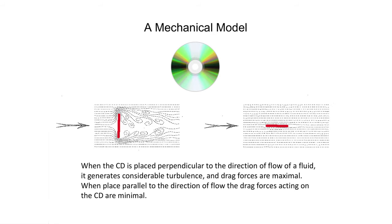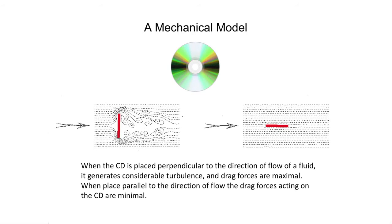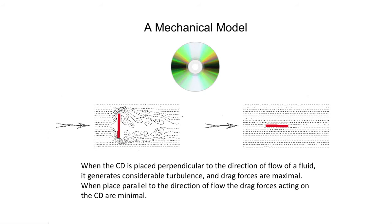We could construct a mechanical model to test different shapes and see how easily that shape moves through the water. One such example is using a CD or DVD. When the CD is placed perpendicular to the direction of flow, the fluid generates considerable turbulence and drag forces are maximized. If we place the CD so that the thin side faces the current, the amount of turbulence and drag is minimized and it moves more easily through the water.